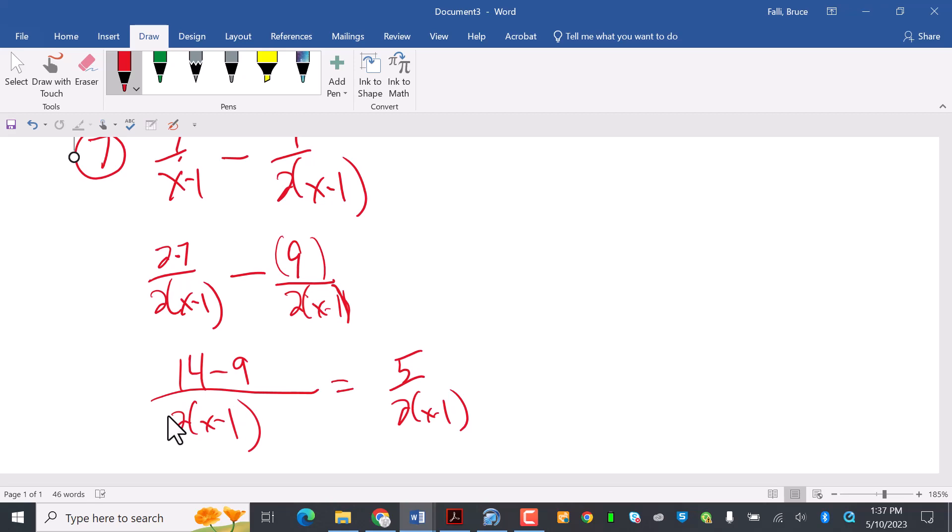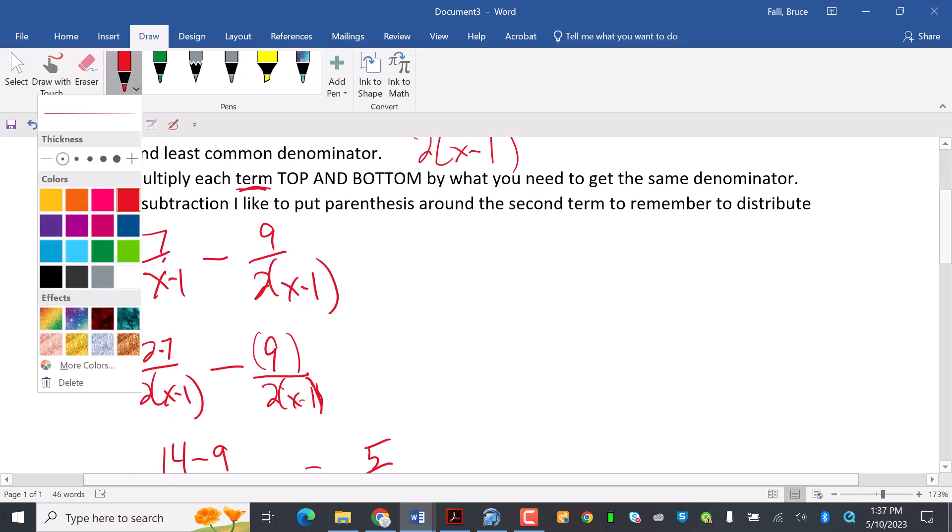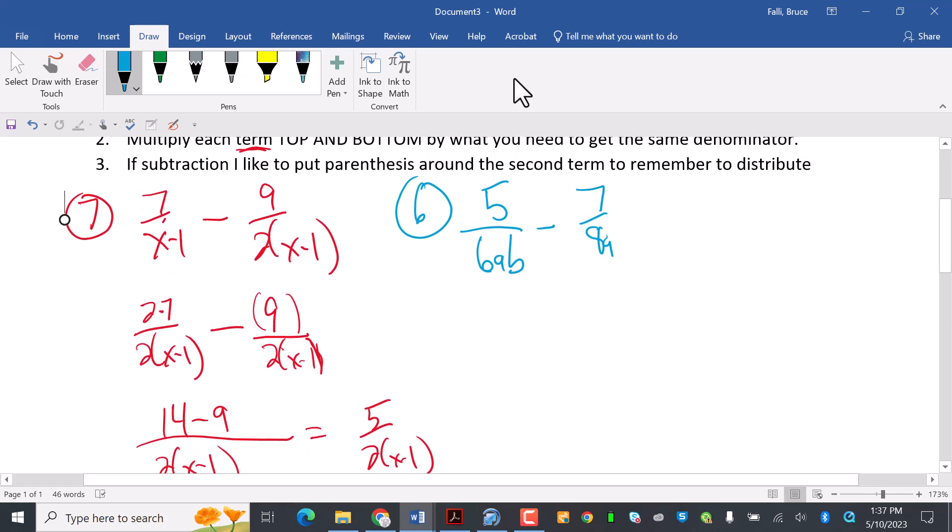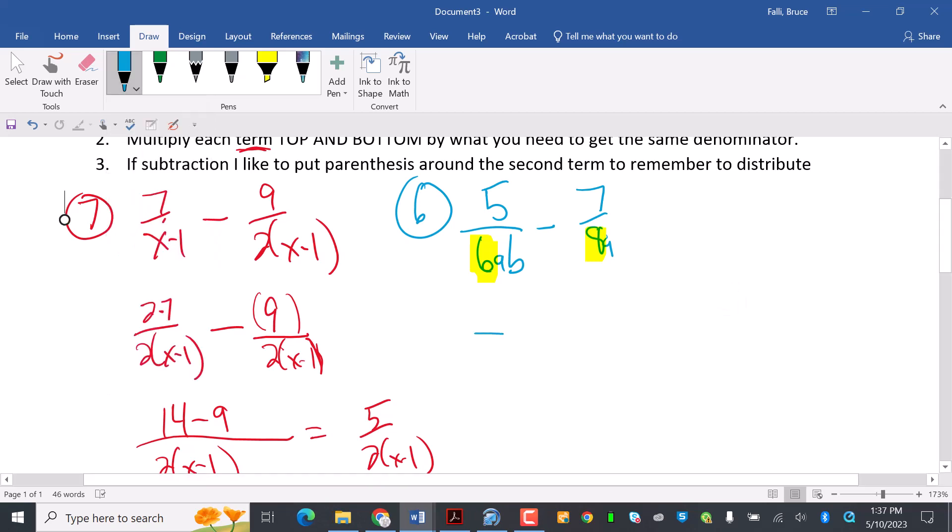Another one that's subtracting like that would be number six. For six, I have 5 over 6ab minus 7 over 8a. So I'm going to look for the least common denominator here. We very typically jump right to the 6 times 8, which is 48. And you could do that. I hope you don't. I hope you see that 24 is a smaller one that goes in there. So I'm going to look for 24ab on both sides.